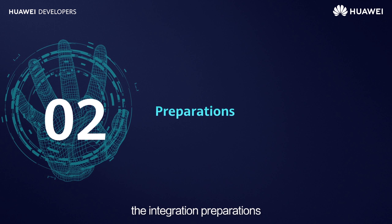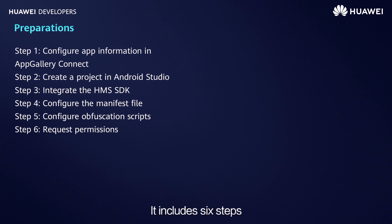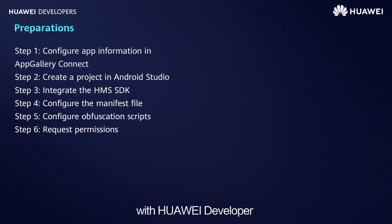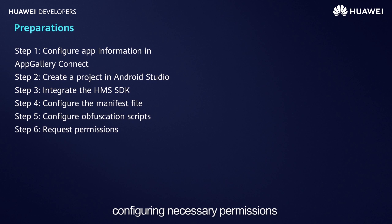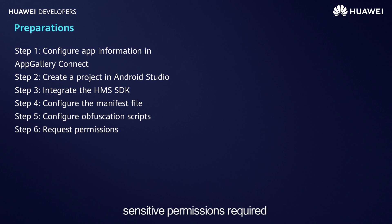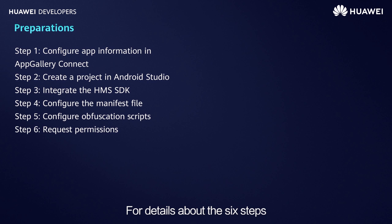Now let's move on to the integration preparations. It includes six steps: registering with Huawei Developer and creating an app, creating a project in Android Studio, introducing the Awareness SDK in the build.gradle file, configuring necessary permissions in the manifest file, configuring obfuscation scripts for your app, and dynamically applying for sensitive permissions required by the API in code. For details about these six steps, please refer to the guides on Huawei Developer.